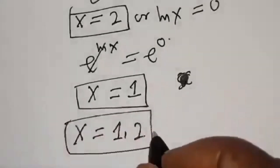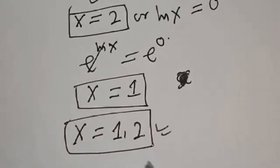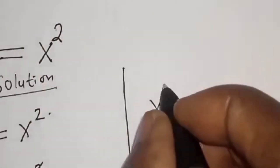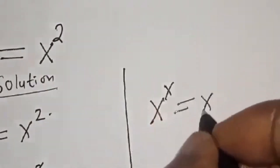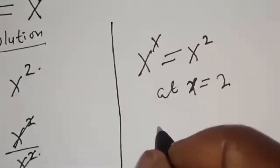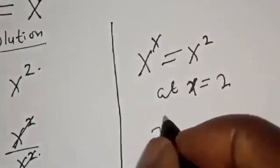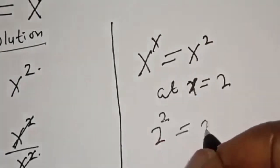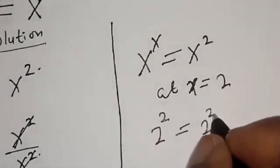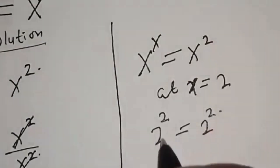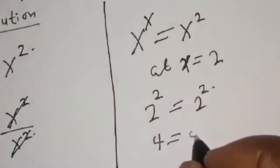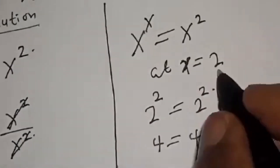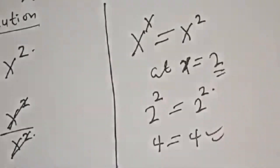Let's check to confirm if our answers are correct. The original equation is s raised to power s equals s squared. For s equals 2: 2 raised to power 2 equals 2 squared, which gives 4 equals 4. We satisfy the given equation at s equals 2.